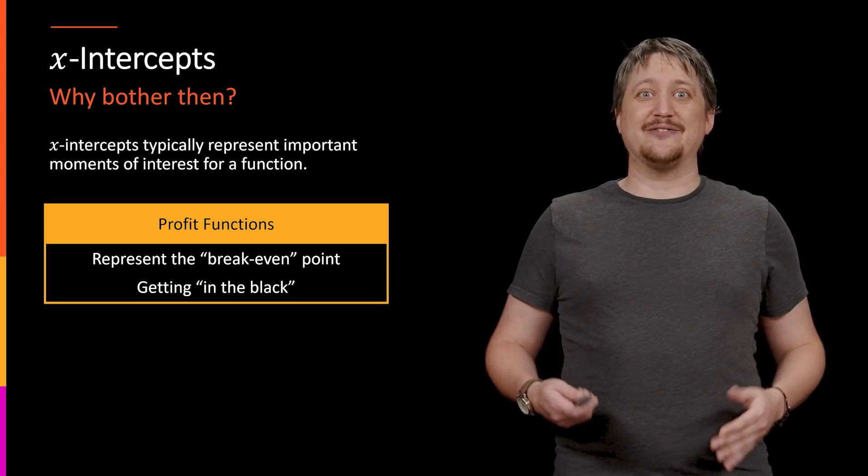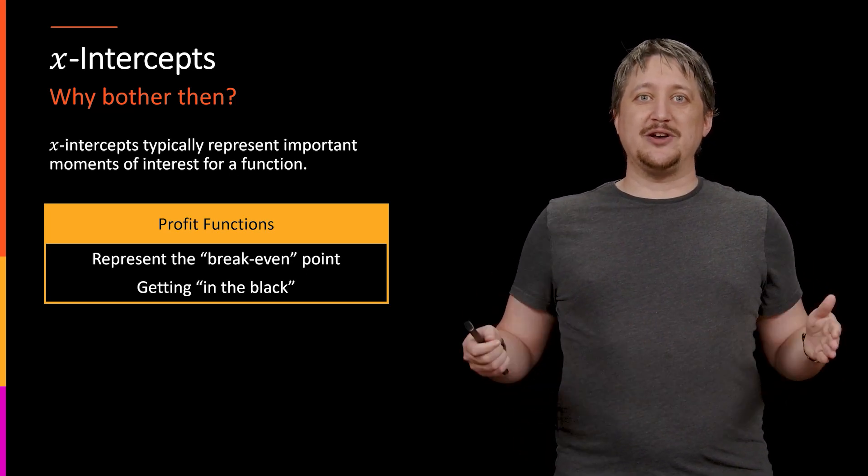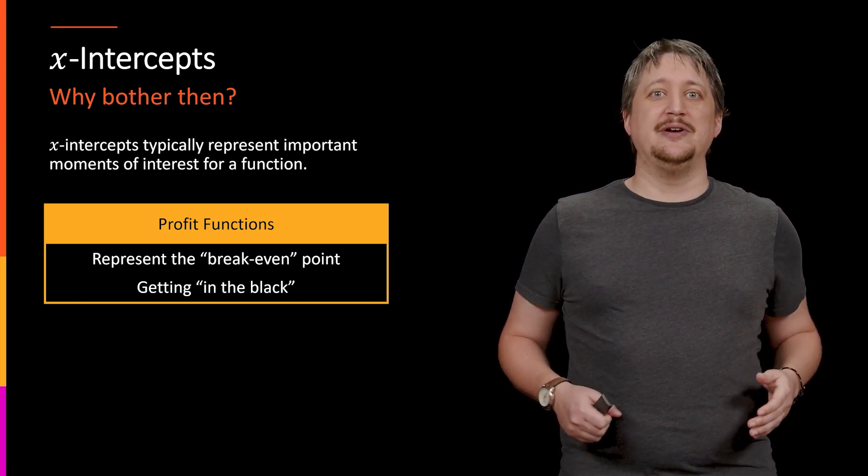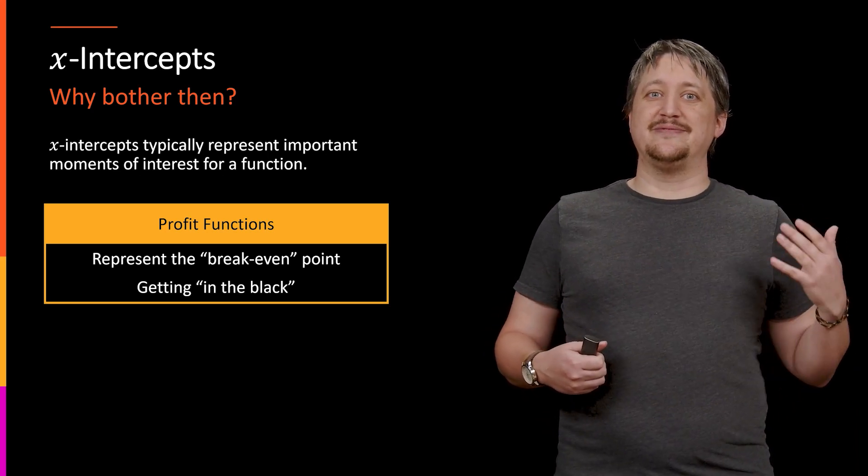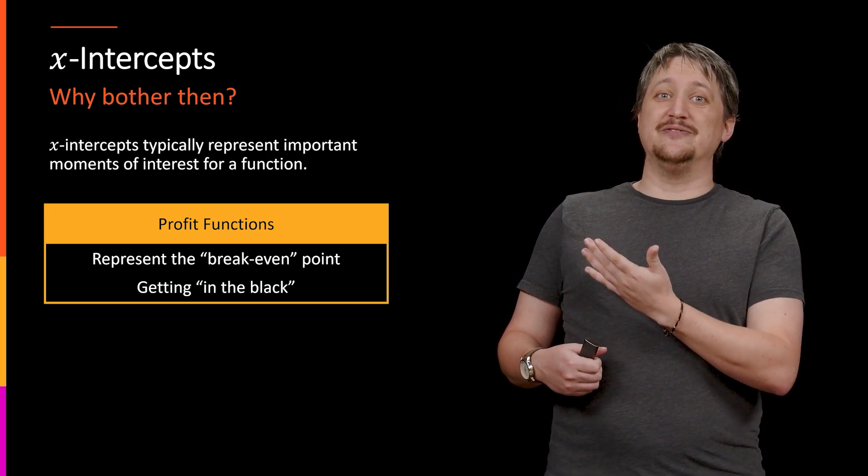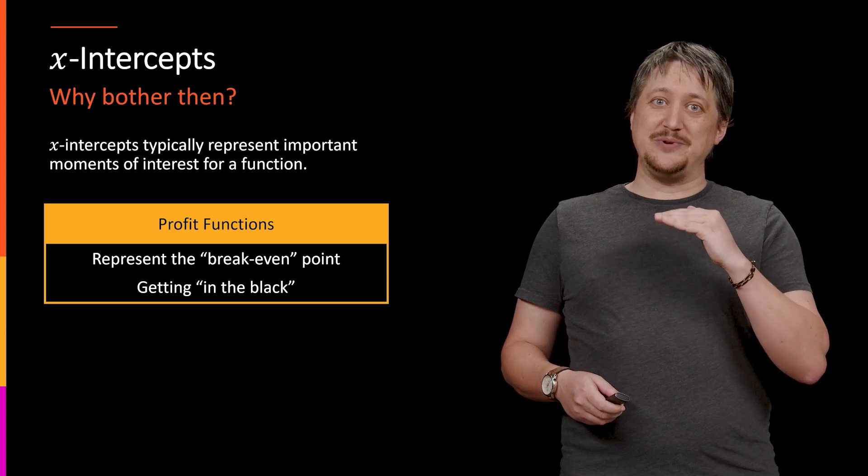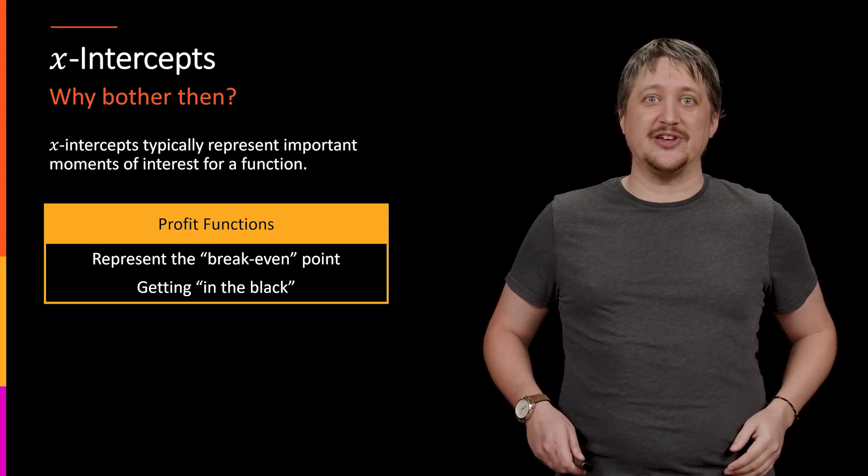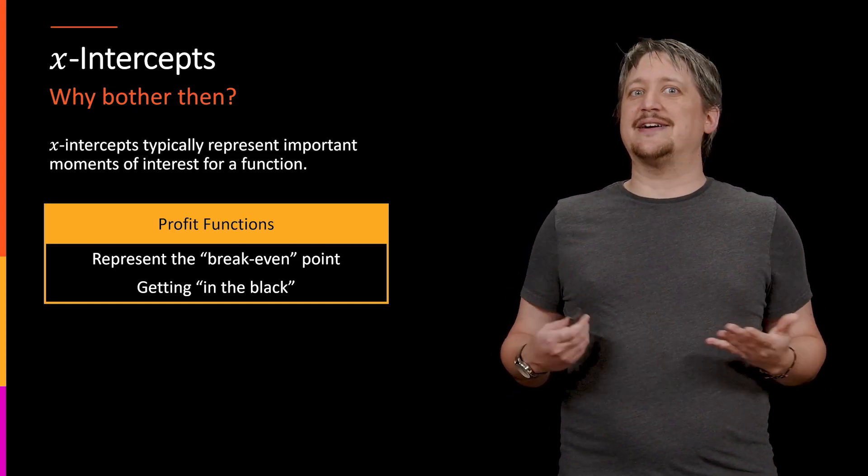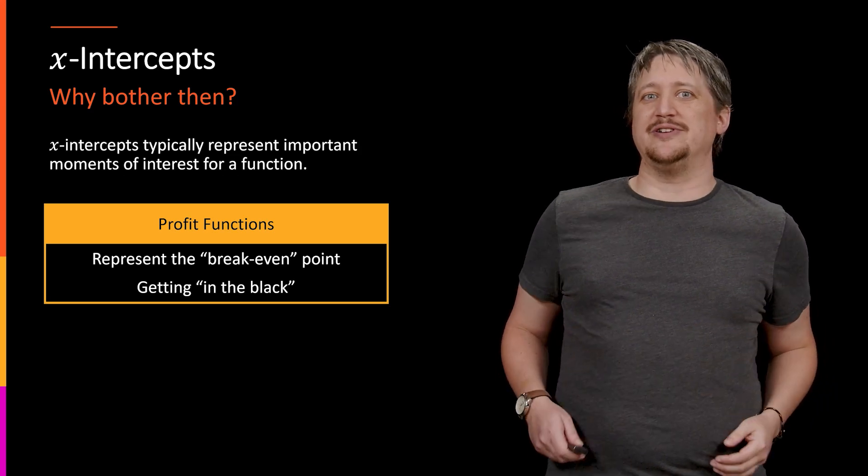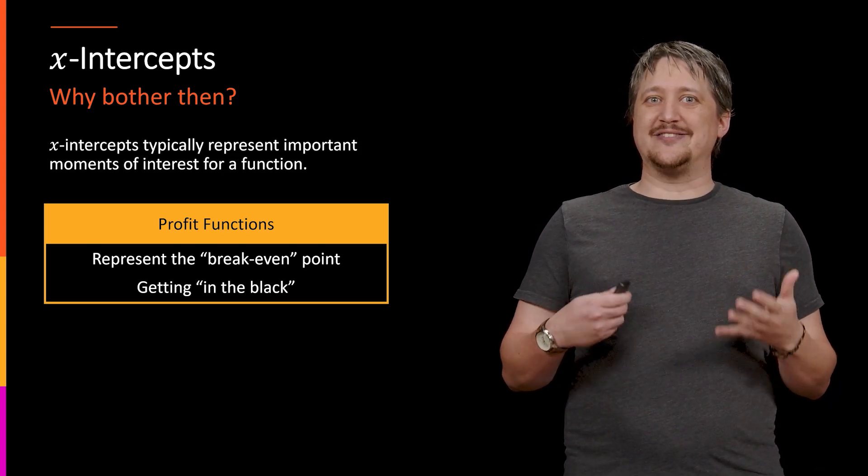Another way of saying this is it's that point in which you're in the black. If you're looking at money that you make over time versus costs over time, when you finally transition to getting a positive value right as you hit that zero, that x-intercept, you're going from in the red to in the black. This is really important in business when this thing happens.